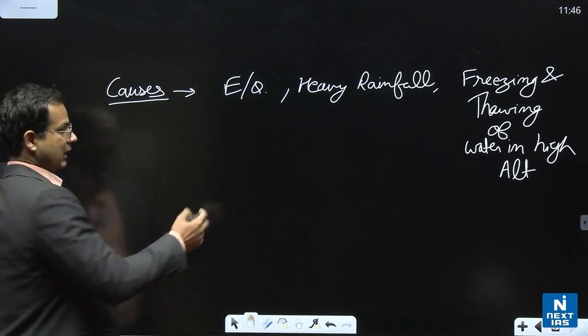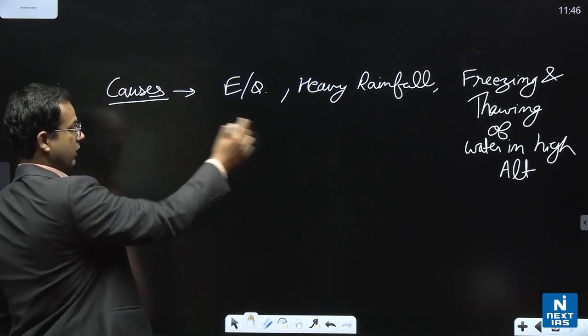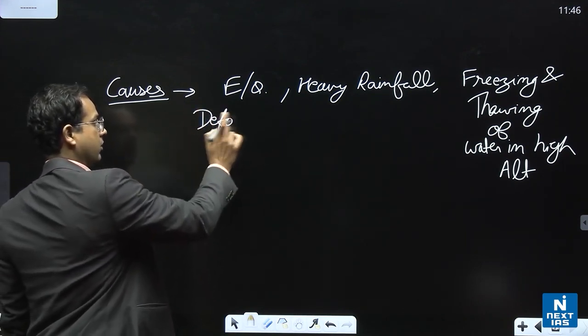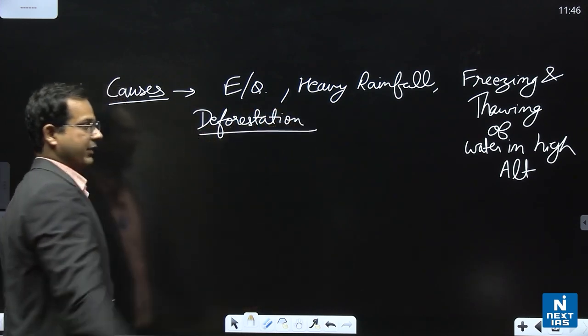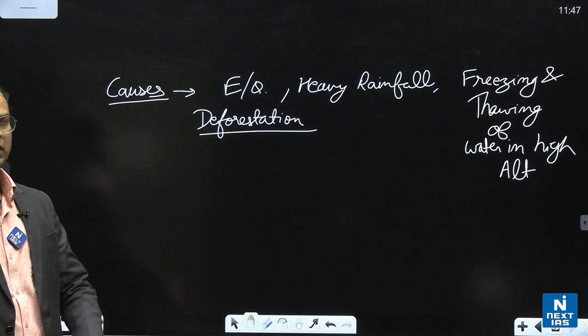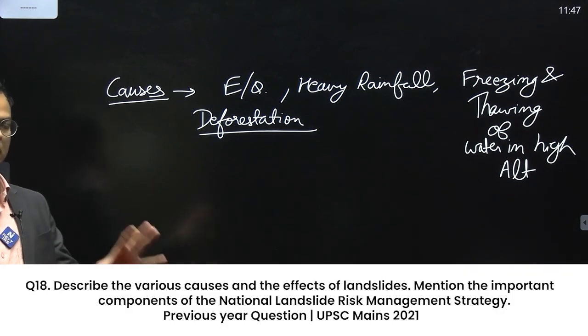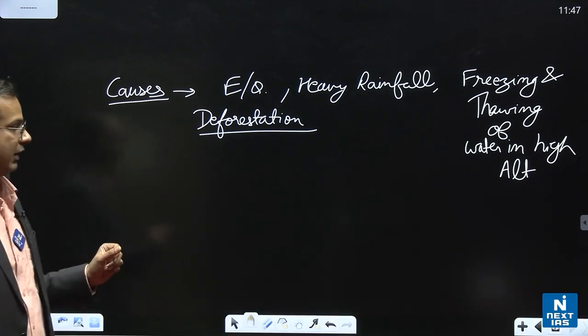These are some reasons. In addition to these there can be other reasons also. For example, deforestation. Deforestation destabilizes the land. So there is a high amount of deforestation in the Himalayan belt of India. If you go and see, you can easily observe the amount of deforestation that is there.